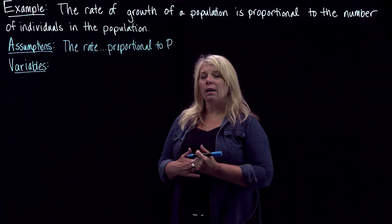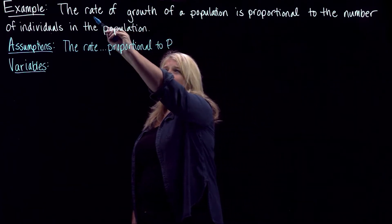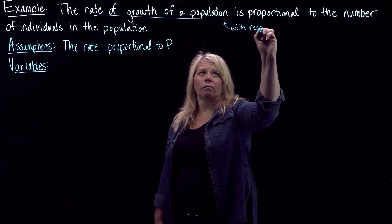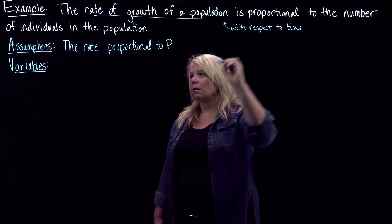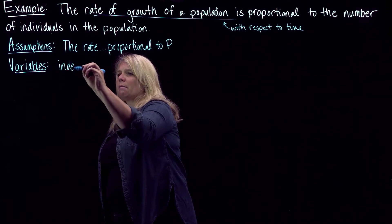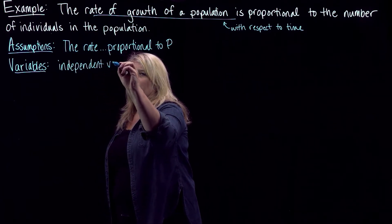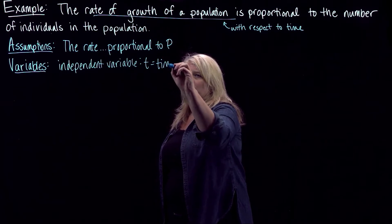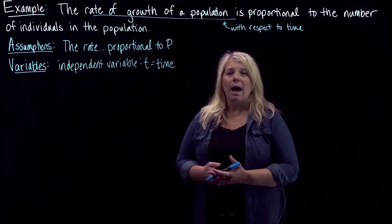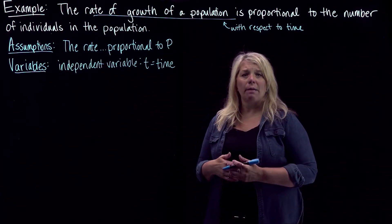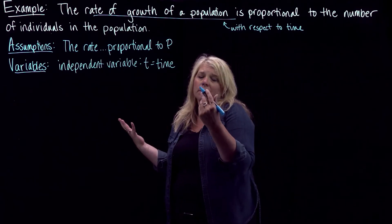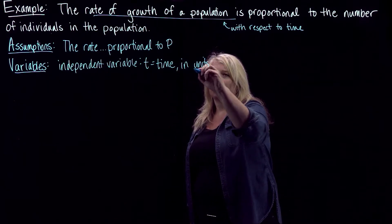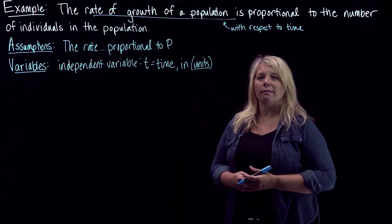Our independent variable is going to be based on time. When we're talking about a rate of growth of a population, we're talking about with respect to time. So our independent variable is time — and depending on the problem and what other data we have, we might define that to be time in days, months, years, weeks, seconds, or minutes — some specific units we'd define based on whatever knowledge we have of the situation.